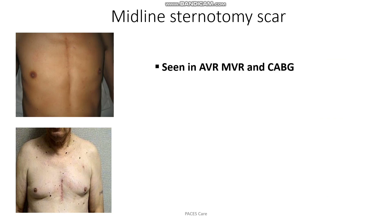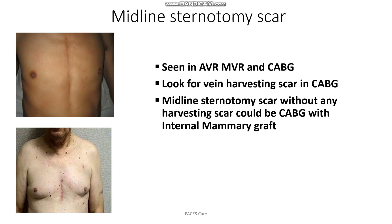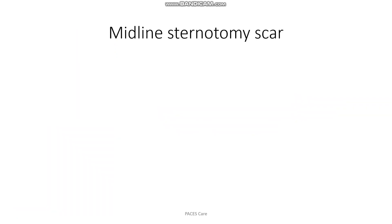But if you can't find any vein harvesting scar in the hands or leg, then the diagnosis has two possibilities: one could be prosthetic heart valve, and another could be coronary artery bypass grafting with internal mammary graft.